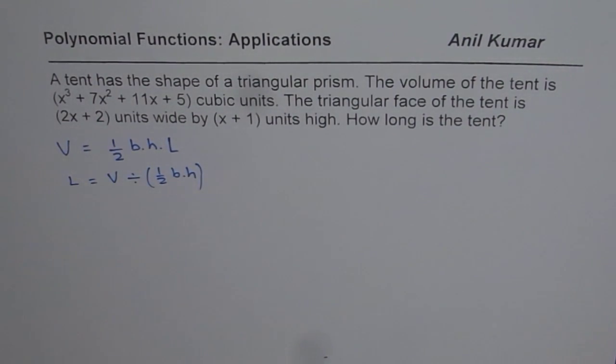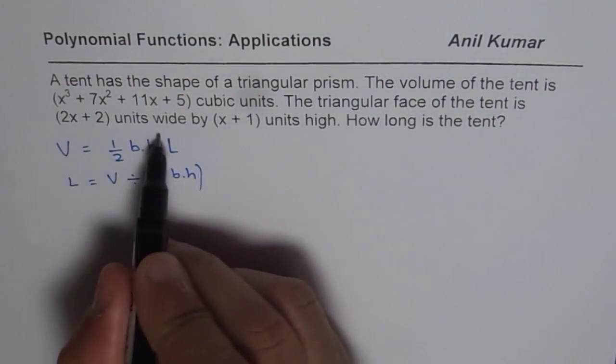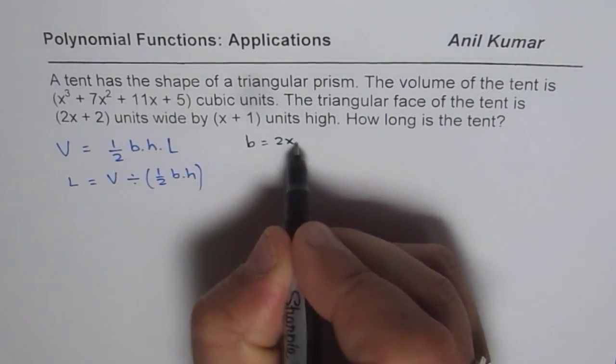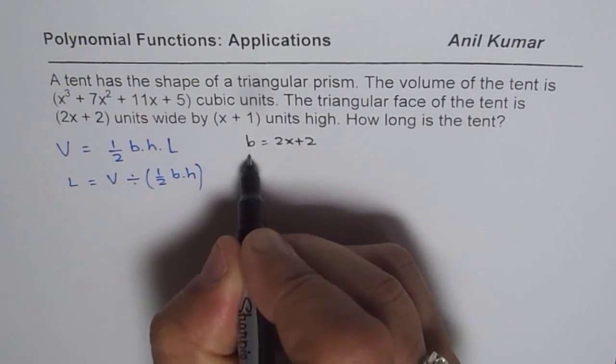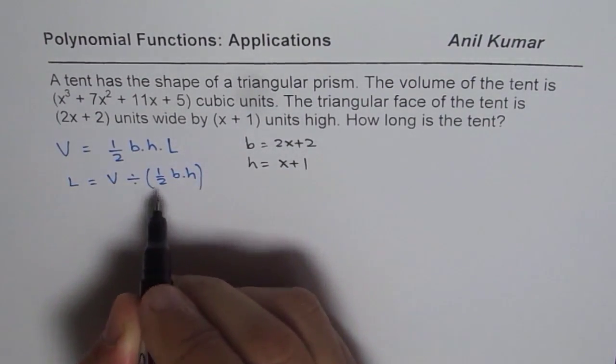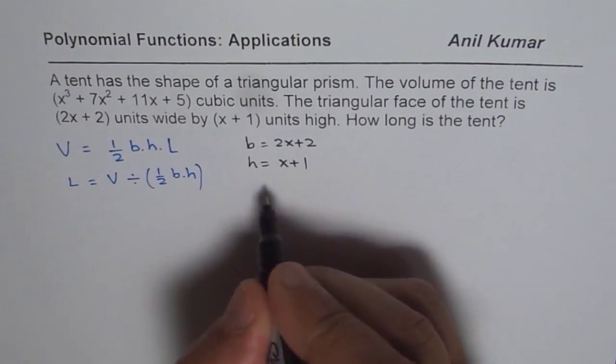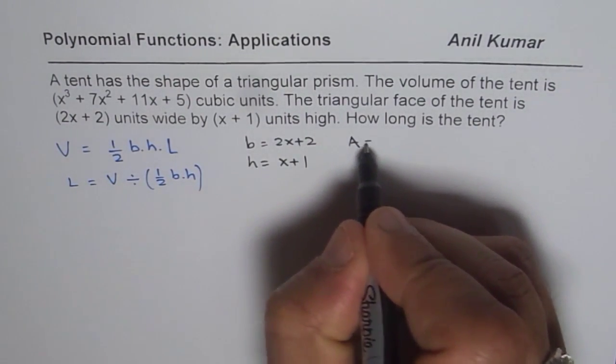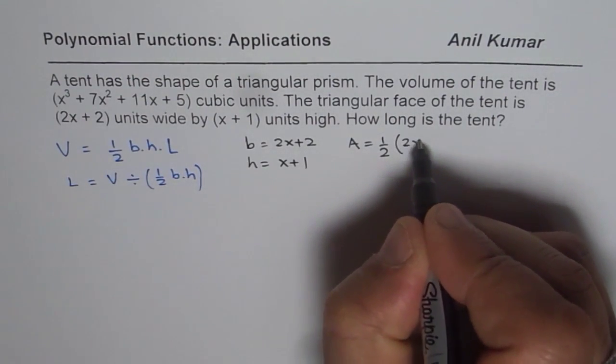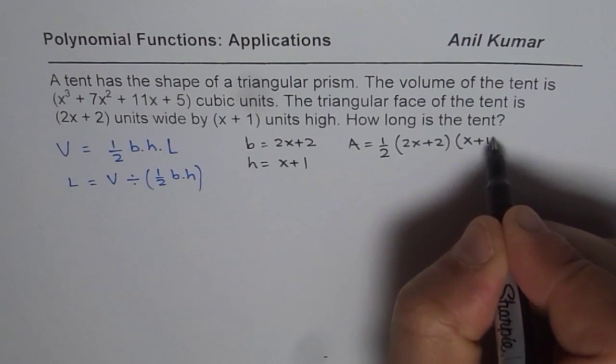Now, base is given to us. We say base is equal to 2x plus 2 and the height for us is x plus 1. Half times base into height will be the area. We can say area equals to half times 2x plus 2 times x plus 1.